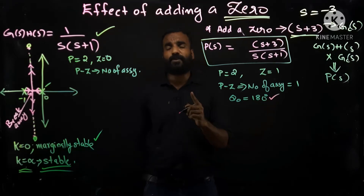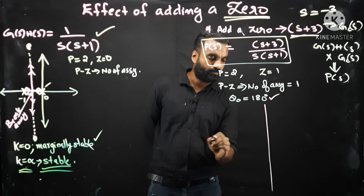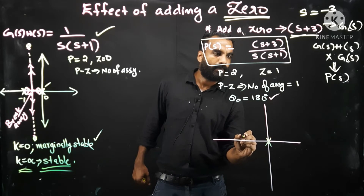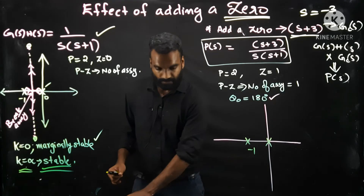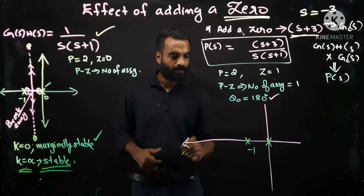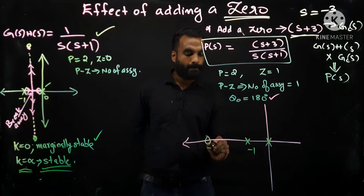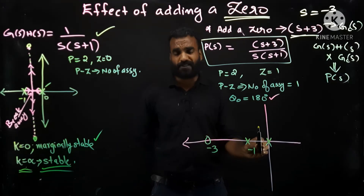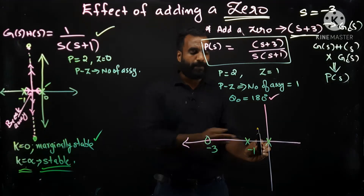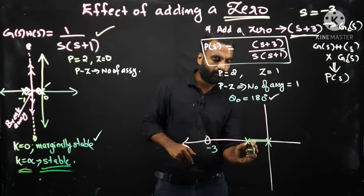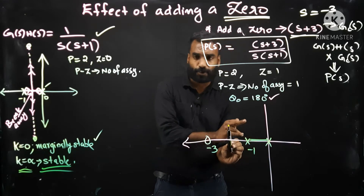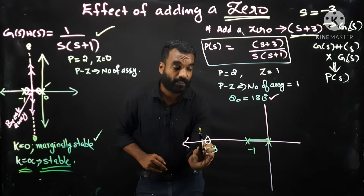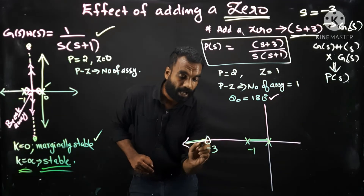Since there is only one asymptote, there is no need to calculate the centroid. Now let me draw this root locus diagram. The poles are at s=0 and s=-1, and one zero is at s=-3. Applying rule 7 — which segments of the real axis have root locus — between 0 and -1 the number of poles plus zeros to the right is 1 (odd), so root locus is present. Between -1 and -3 the count is 2 (even), so root locus is not present. Beyond -3 toward -∞ the count is 3 (odd), so root locus is present all the way to infinity.